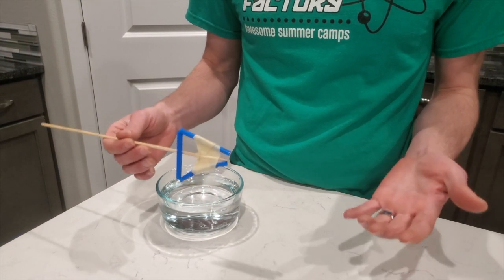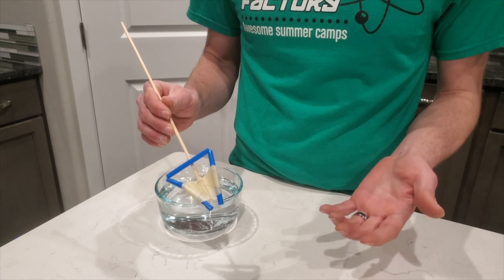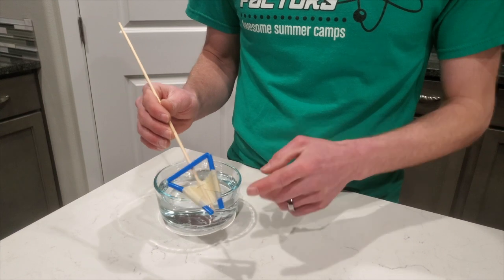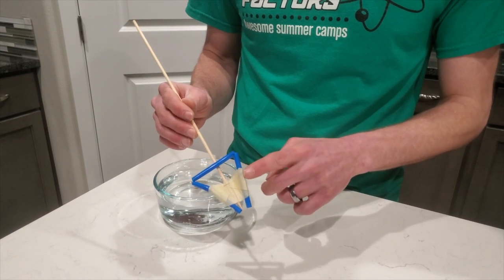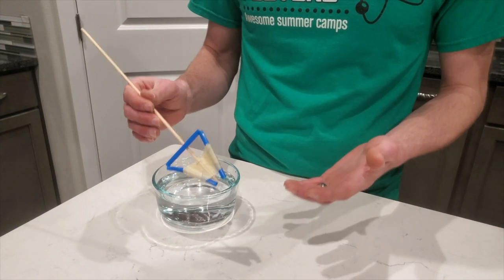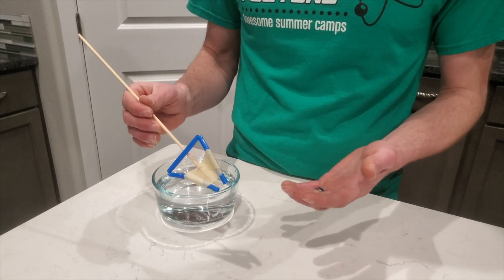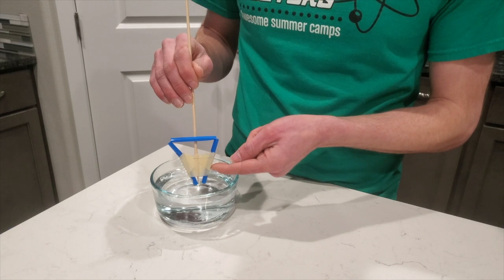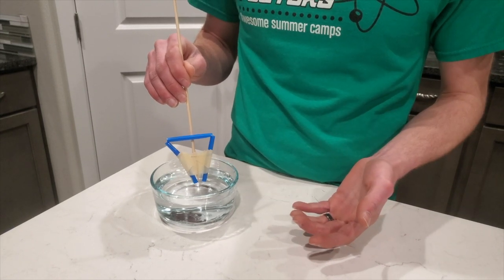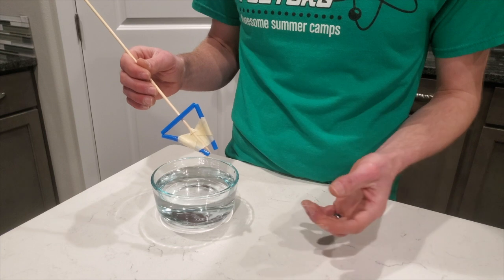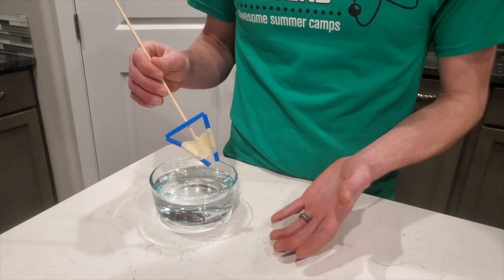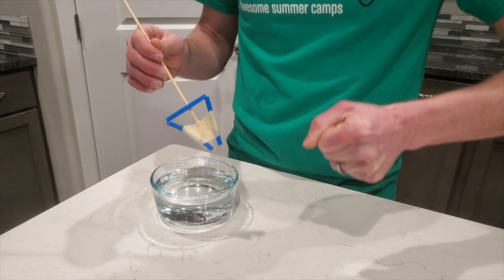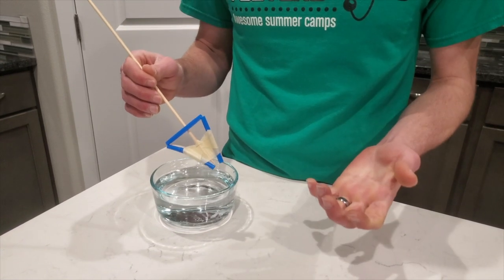You might be wondering, how does this work? Well, there's a couple of things going on here. First is the capillary effect. Water is attracted to itself, but it's also attracted to a lot of other materials like plastic. And so you might notice when you use a drinking straw in a restaurant that when you put the straw into your cup, the water level inside the straw is a little higher than outside of the straw. That's because of the capillary effect. The narrower the opening of the straw, the higher that water level is going to be because the more the water can pull itself up just with its attraction to the plastic.